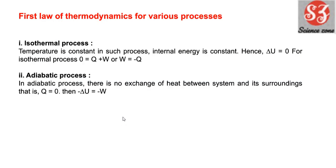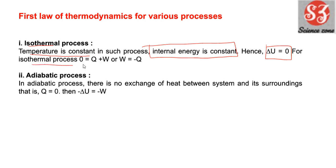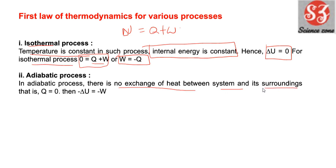Next है first law of thermodynamics for various processes। Isothermal process में temperature constant होता है, इसलिए internal energy भी constant होती है, that is ΔU = 0। First law था ΔU = q + w, तो 0 = q + w, therefore w = −q। Next है adiabatic process — adiabatic process में कोई heat exchange नहीं होता between system and surrounding, तो q = 0। उस case में ΔU = w।